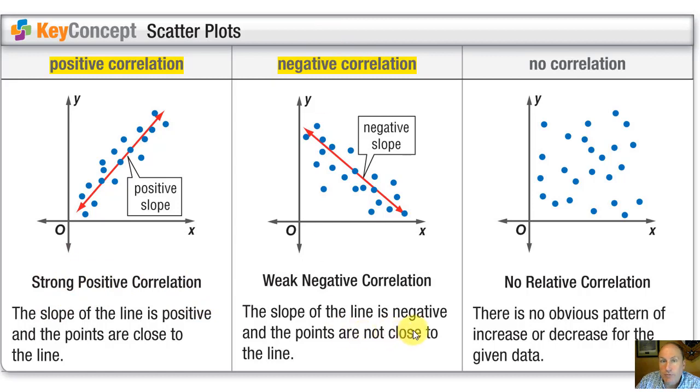The second example shows negative correlation. You can see the blue dots, the data points, are clustered generally around the line of fit. They are sloping negatively. As we go to the right they are going down. So it is a negative correlation.